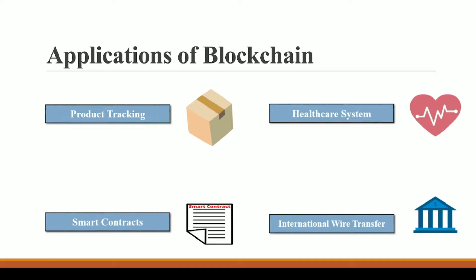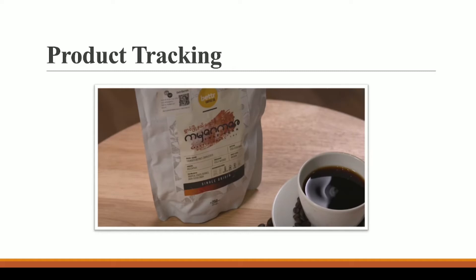Let's start with product tracking. Let's say you want to buy a coffee. You went to the shop and bought this coffee. According to the packaging, it claims this coffee is 100% pure coffee brought from Brazil — just an example. But after some time you realize this is not actually Brazilian coffee; this is a fake coffee — completely false advertising.